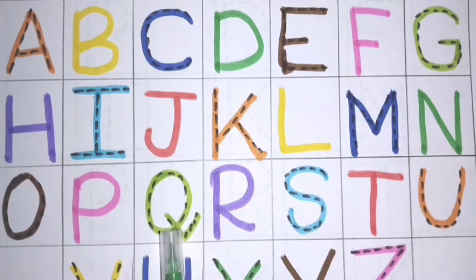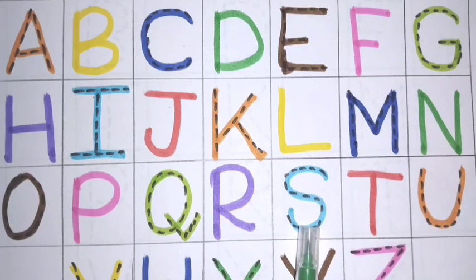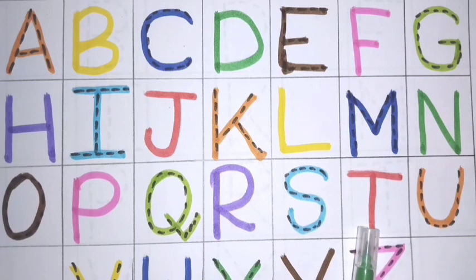Q, Q for queen. R, R for rose. S, S for sunlight. T, T for tie hair.